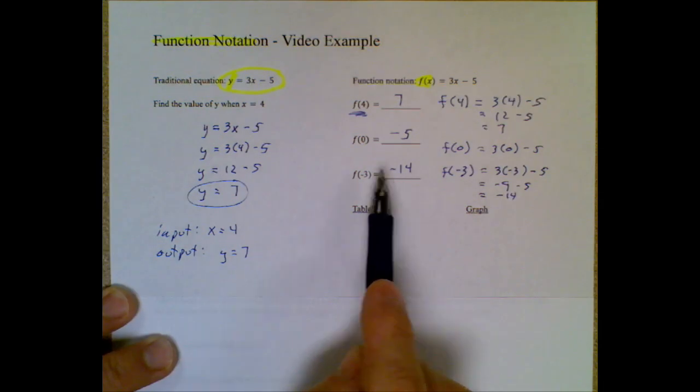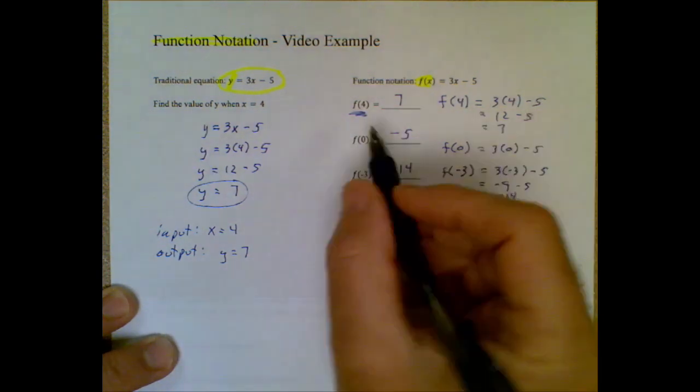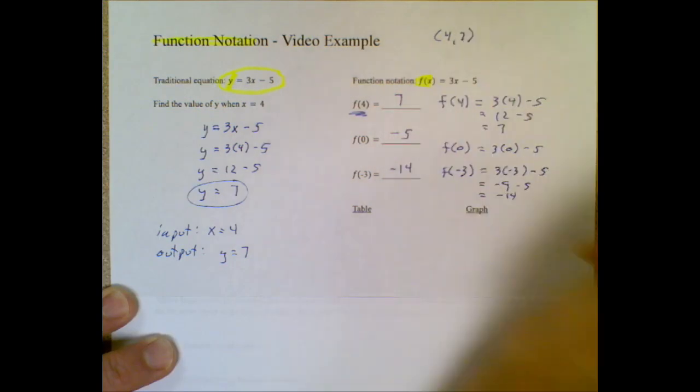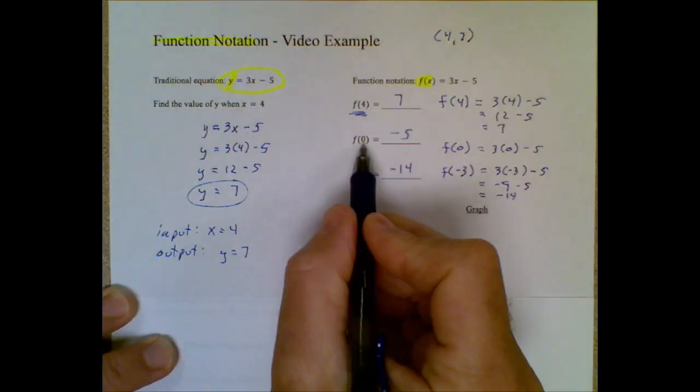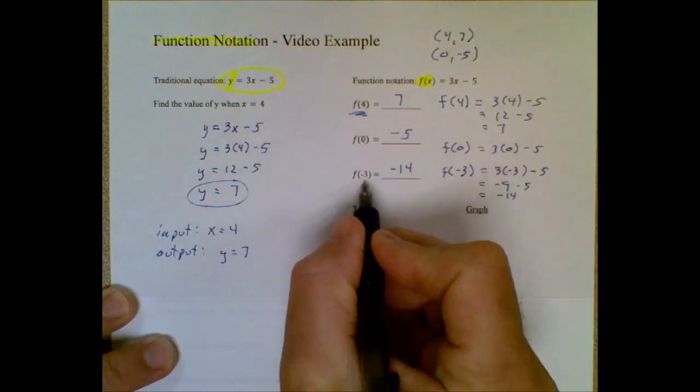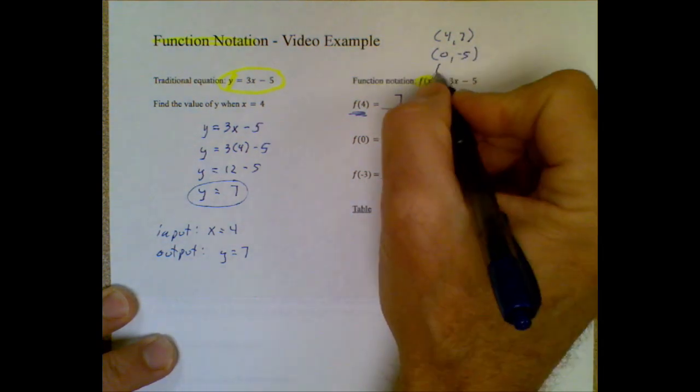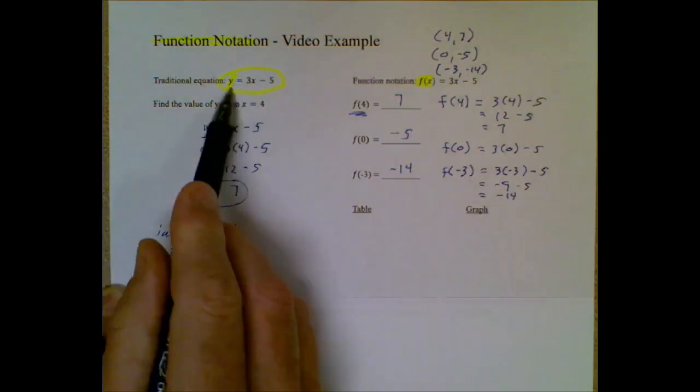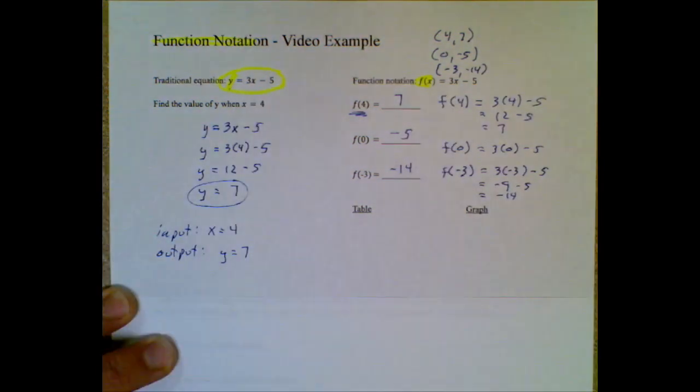Now in all these cases, we've plugged in an x value and gotten out a y value. So for example, when we plugged in a 4 and got out a 7, you can think of that as the ordered pair 4 comma 7. I plugged in a 0 and got out a negative 5. I plugged in a negative 3 and got out a negative 14. All the math things that you're used to in this form with slightly different symbolism.